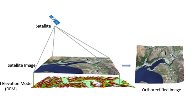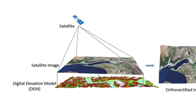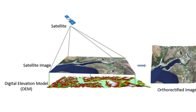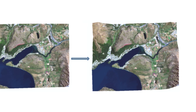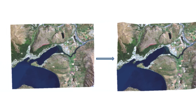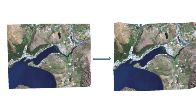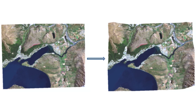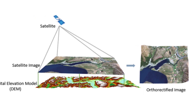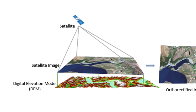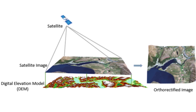Georeferencing and orthorectification can be used to correct for geometric errors in a remotely sensed image. If the correction simply matches image pixels to known ground coordinates, the process is referred to as simple georeferencing. Georeferencing is required when the image lacks a coordinate system and any projection information. The georeferencing tools in ArcGIS create spatial information for an image and give an approximate result.